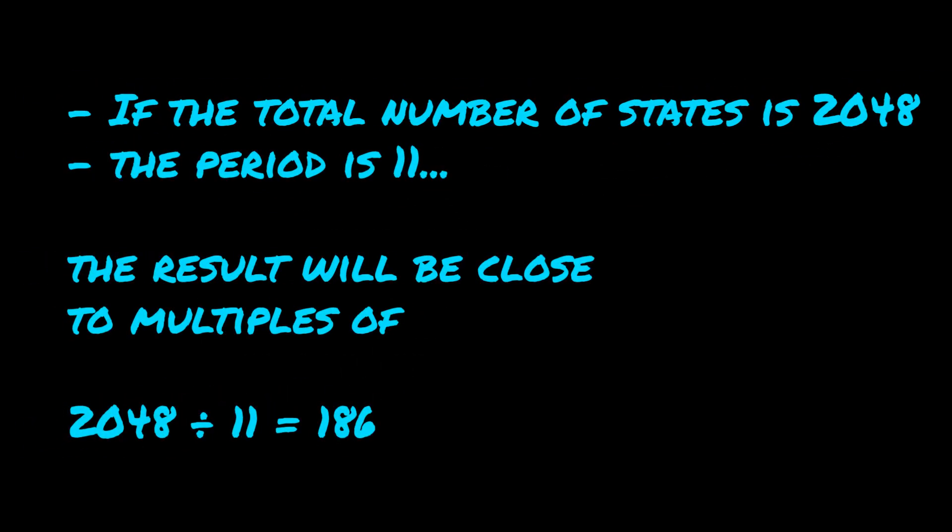Suppose you're trying to find the period of the sequence. What you do is take the sequence and put the computer in a superposition of all the numbers in the sequence — so the first number, the second number, the third number, the fourth number, et cetera. This is something you can do on a quantum computer. Then you take the Fourier transform, and what the Fourier transform does is give you a number related to the period. So let's say the period is 11 and you're taking the Fourier transform over 2048 — what you'll get at the end of the algorithm is a multiple of 2048 over 11, which is approximately 186.